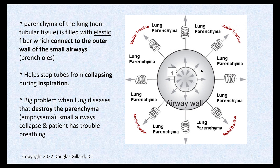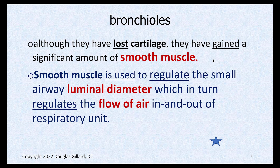Everything about the bronchioles: they lose all their hyaline cartilage and at that point they become bronchioles. The parenchyma of the lung has elastic fibers that connect — that is called radial traction. When those elastic fibers connect to the small tiny airways and hold them open, that force is called radial traction. Diseases that destroy the lung parenchyma will cause these tubes to collapse — that's why people with emphysema can't breathe. The bronchioles gain smooth muscle as they lose cartilage, and just like an arteriole can contract to control blood pressure, bronchioles can contract and regulate the amount of air coming in and out of the respiratory unit.